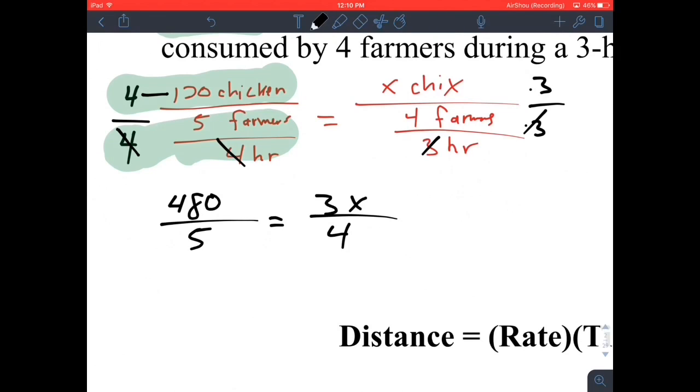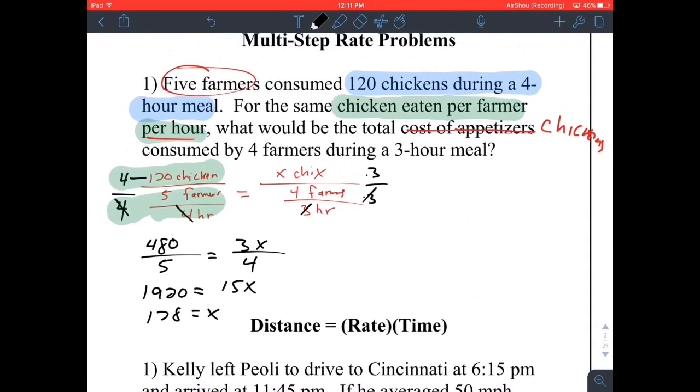Trying to solve this equation, I could cross multiply. Multiply both sides by four and five. On the left I'm going to get 480 times four, which is 1920. On the right I get 15x, and if I divide both sides by 15, I'm going to get 128. The question asked what was the total chickens, would be 128 chickens would be consumed.